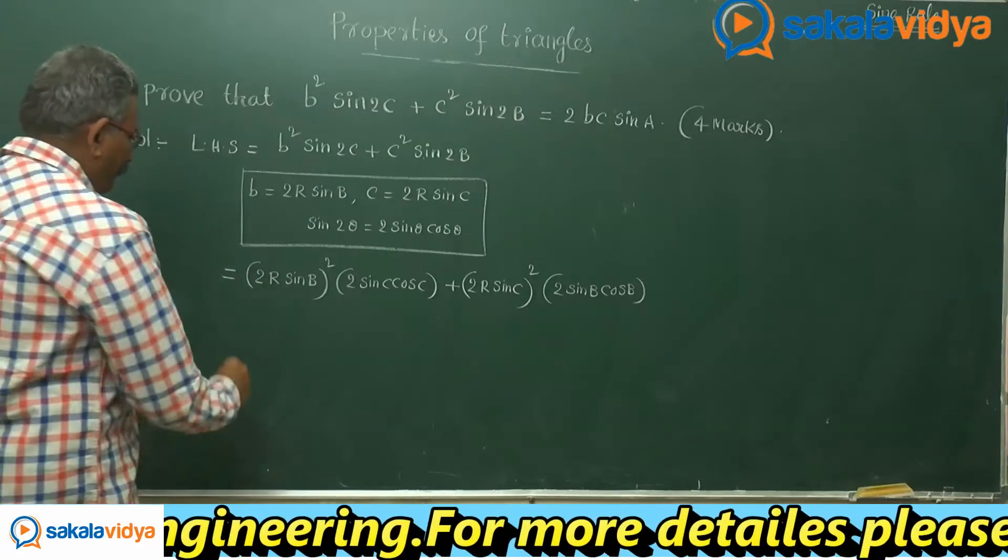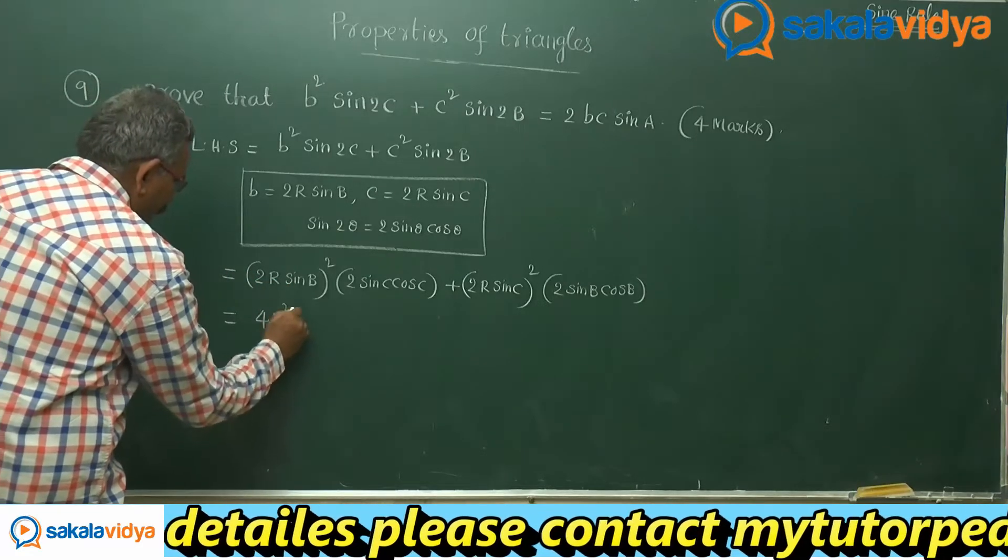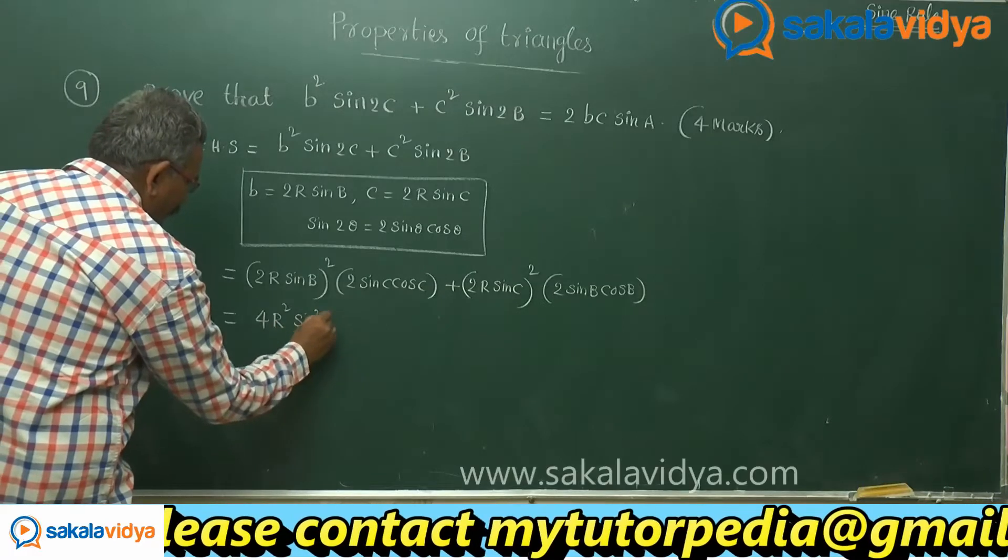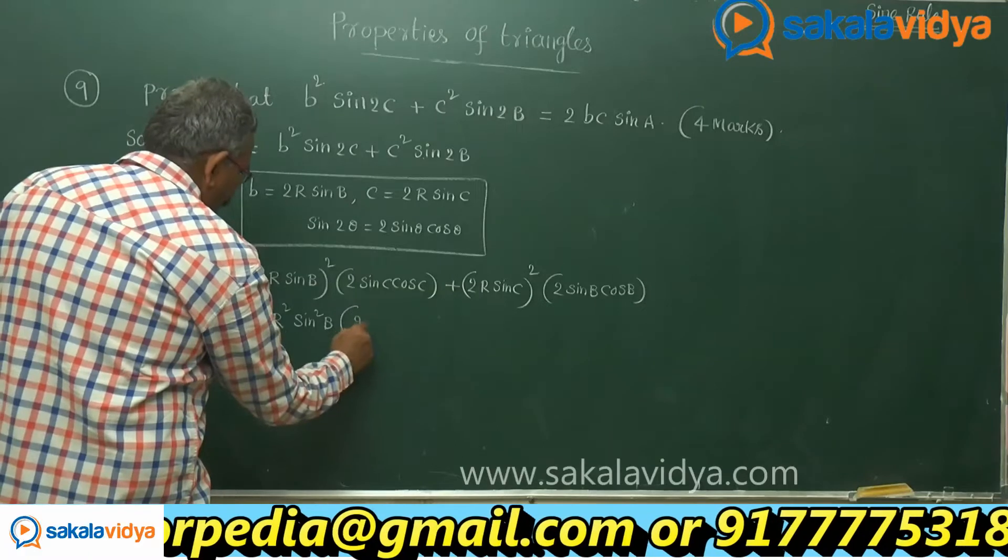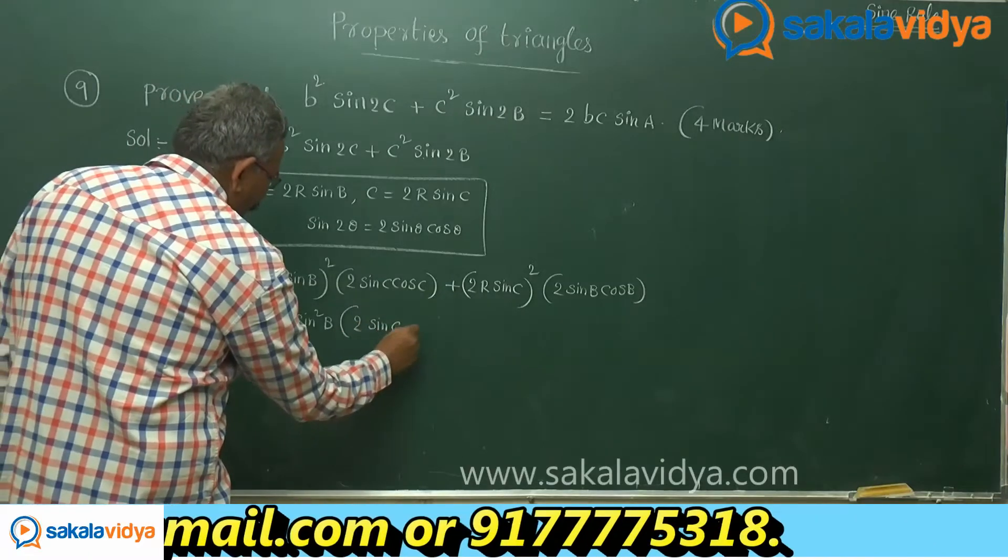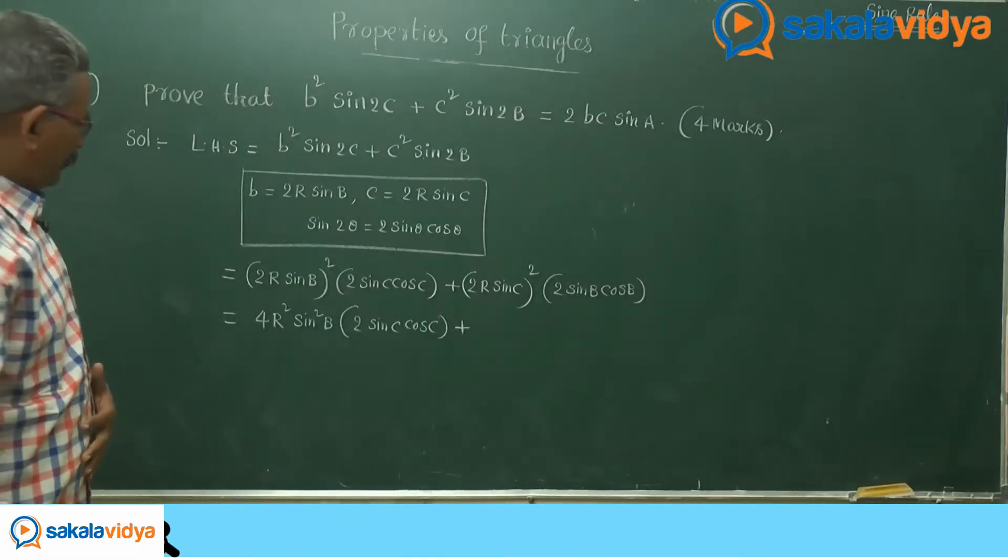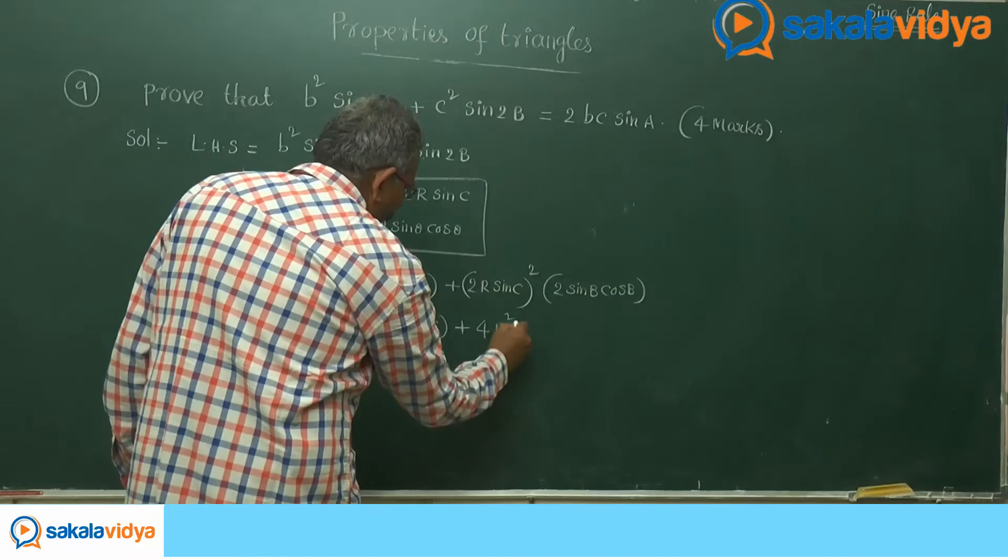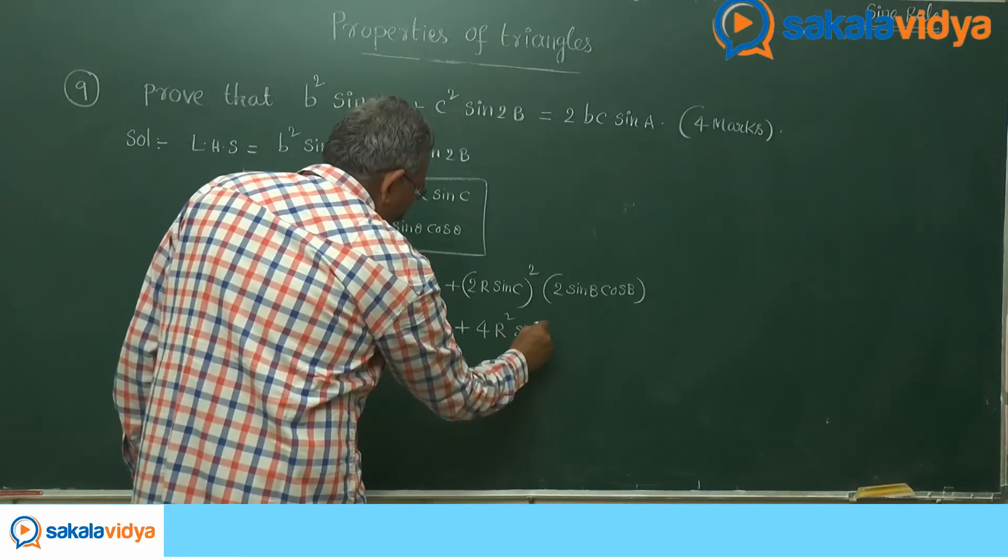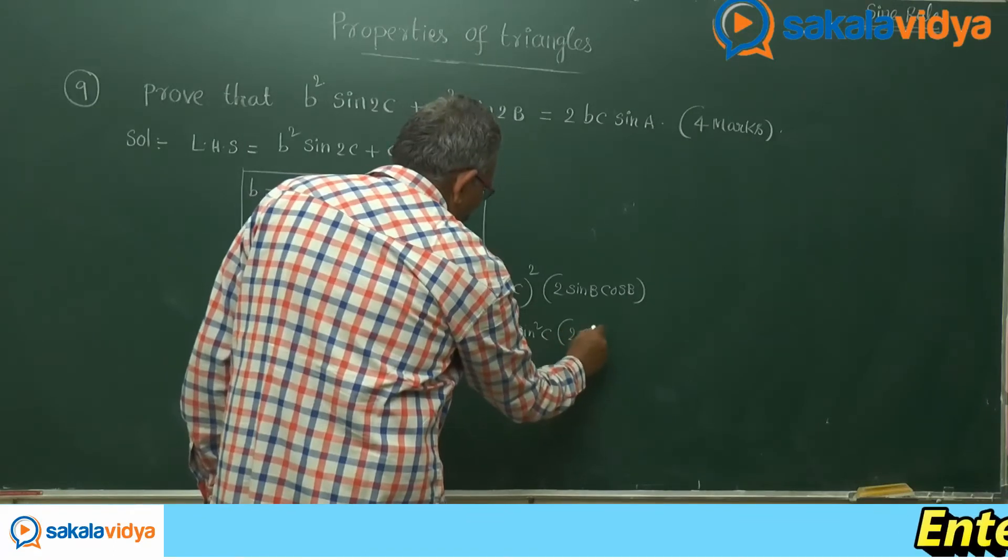This can be simplified now. 4r squared sin squared b into 2 sin c cos c, plus this is 4r squared sin squared c into 2 sin b cos b.